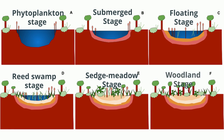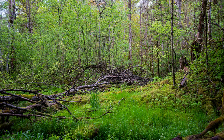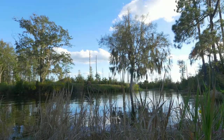Now we are at the Woodland Stage. The soil now remains drier for most of the year and becomes suitable for the development of wet woodland. It contains shrubs and trees. This type of wet woodland is also known as a carr. Carrs are wetlands that are dominated by shrubs rather than trees, and they look a little bit like a swamp, but a drier swamp.